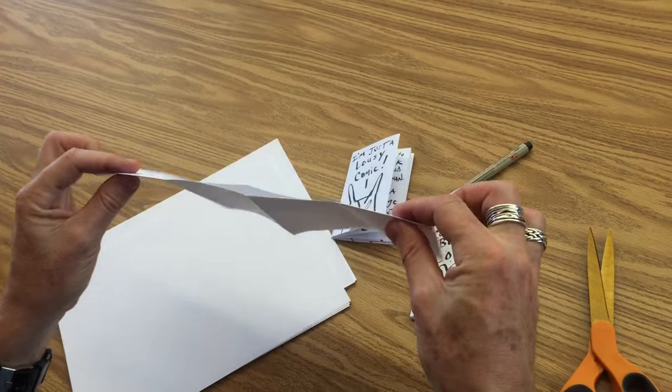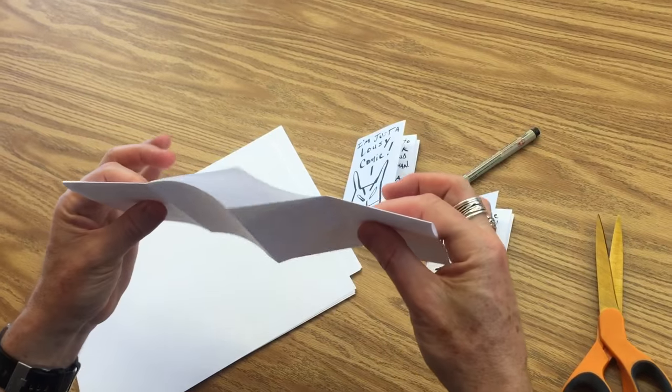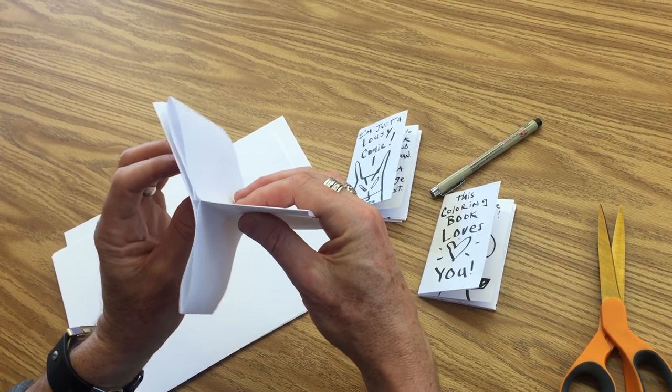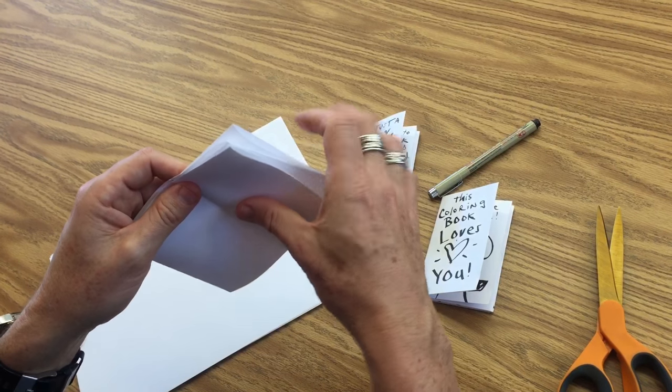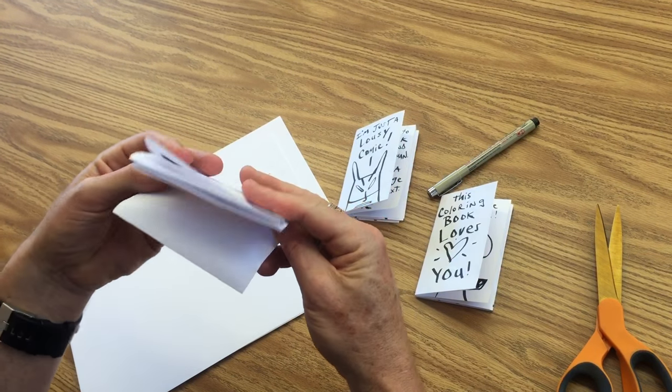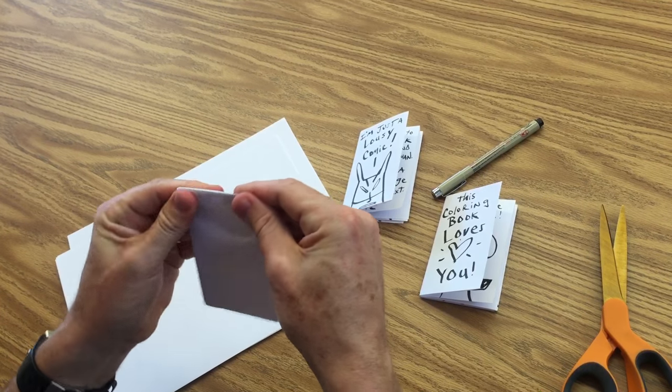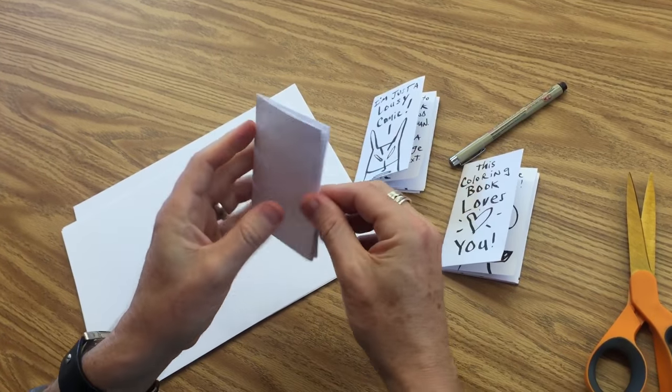Open it back up lengthwise, fold it in half lengthwise, and now push those two pages apart. Flap that that way, flap that piece that way, folding it back into a little book. Nice and tight. And there you go.